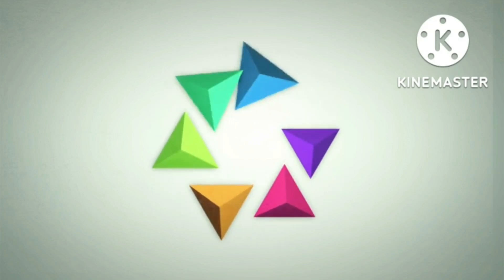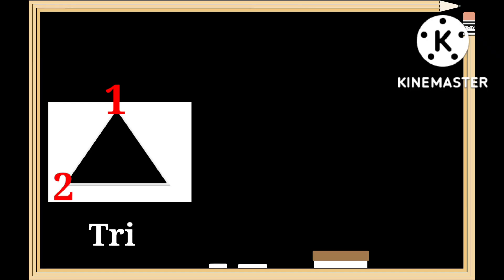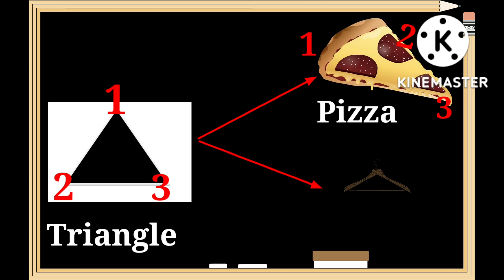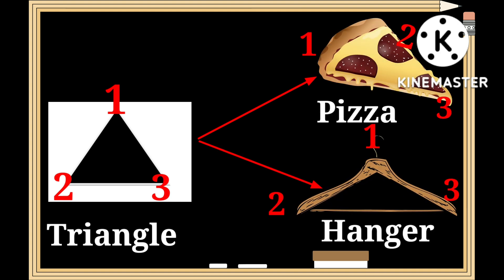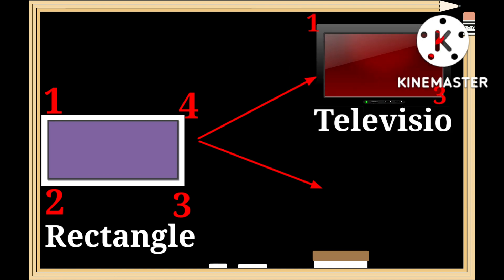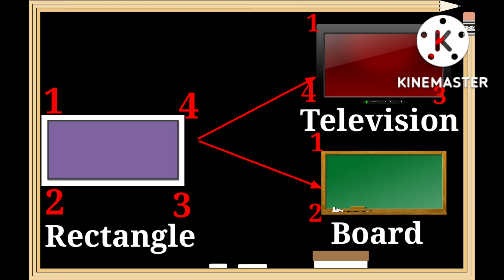This is a triangle — t-r-i-a-n-g-l-e. As you can see, the shape of a pizza and a hanger has got the shape of a triangle. This is a rectangle — r-e-c-t-a-n-g-l-e.